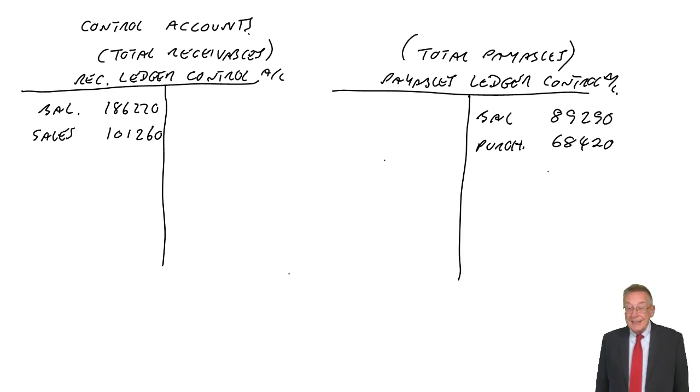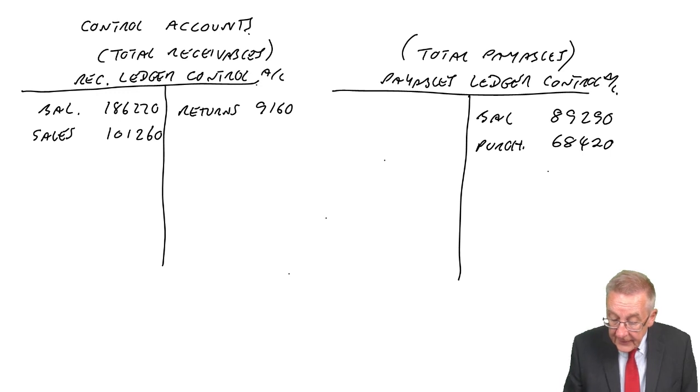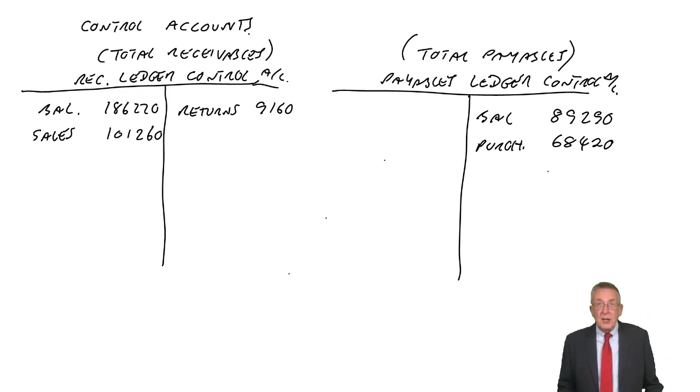Sales returns. Sales returns means a customer is returning goods to us. If they're returning goods, they owe less money. Debit sales or debit returns, credit receivables. 9,160. The nice thing is you don't have to worry about the double entry. Surely if they've returned goods, they owe us less, credit receivables.